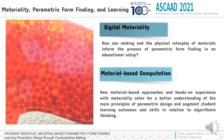In this paper, we address through computational design education: how can making and physical interplay of materials inform the process of parametric form-finding in an educational setup? How do material-based approaches and hands-on experience with materiality cater for a better understanding of the main principles of parametric design, and augment students' learning outcomes and skills in relation to algorithmic thinking?